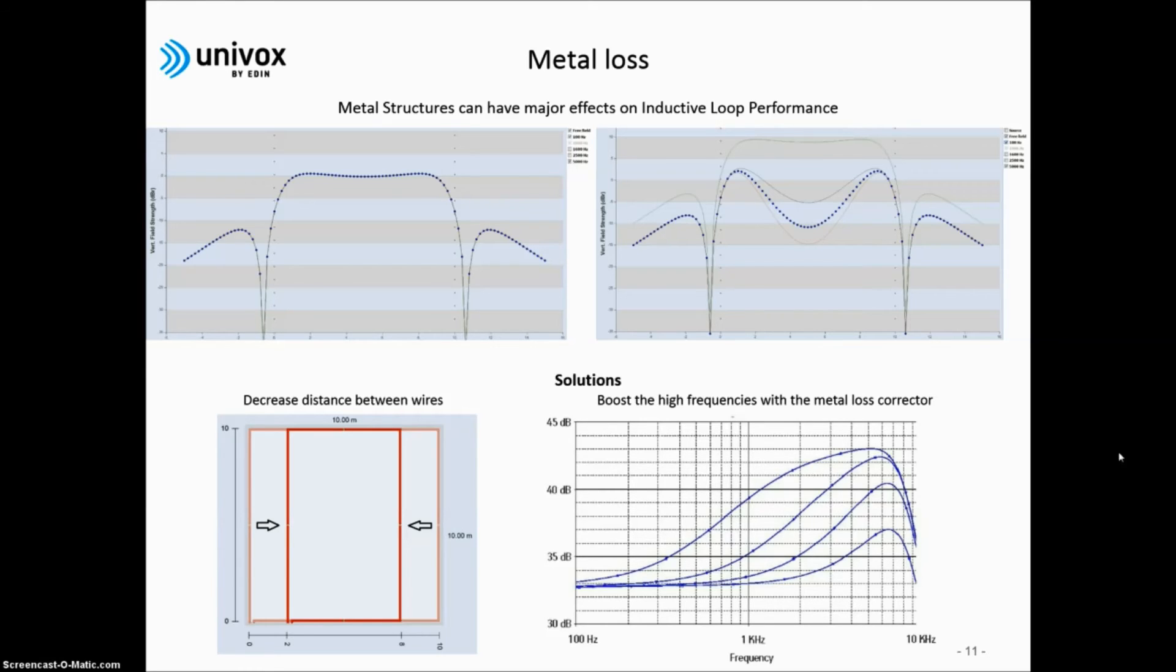But if the same loop would be installed on a reinforced concrete surface, for example, the loop would induce a current in the rebar, and the signal would be affected in several ways. First, the overall field strength would get attenuated, as you can see on the graph on the right. The dotted blue line on the graph represents field strength, and the green graph shows how the field would have performed in free field. Also notice how the curve would bend. This means that the field would get dramatically weaker the further away you are from the transmitting wire. In other words, towards the center of the loop.